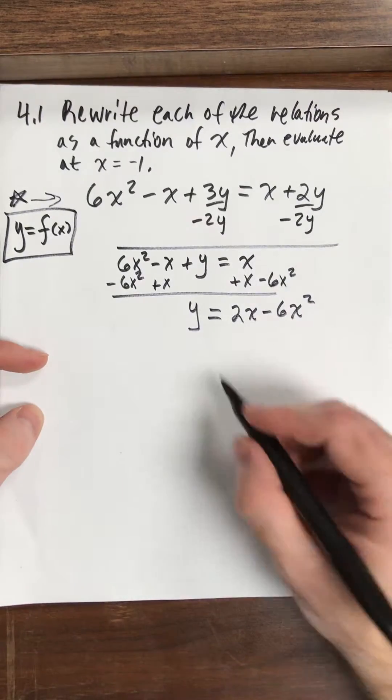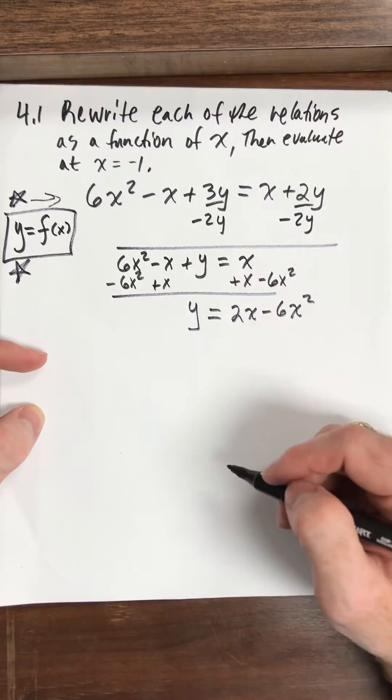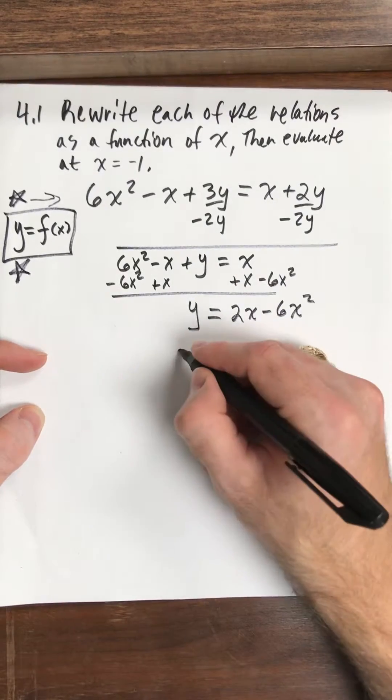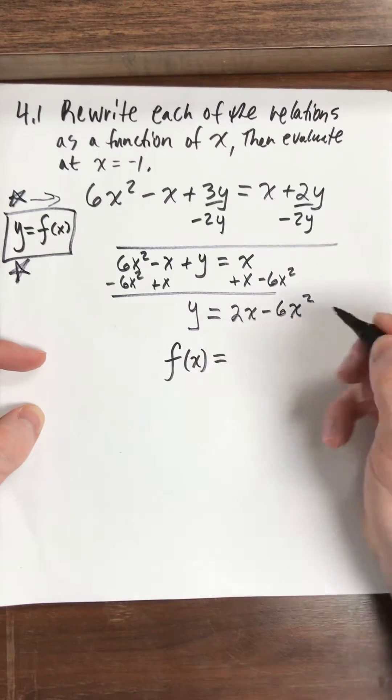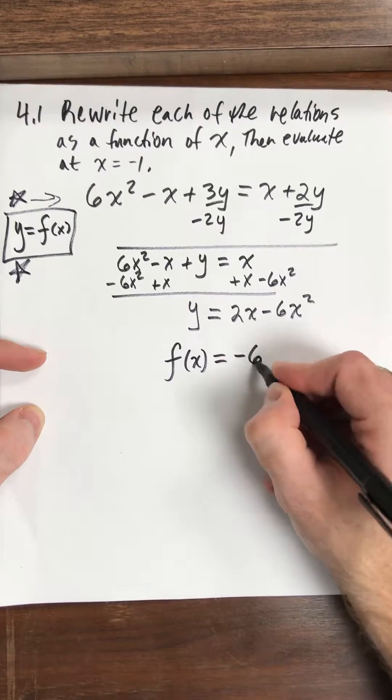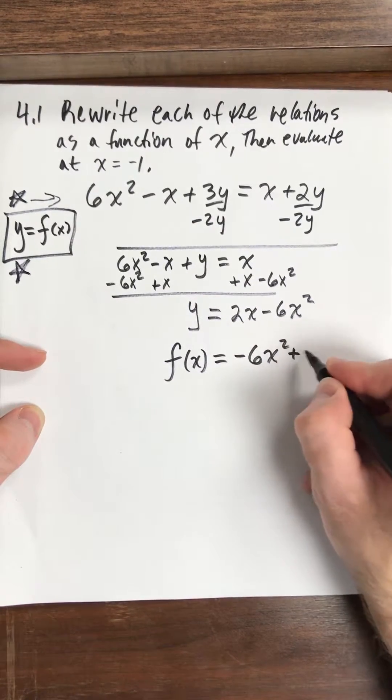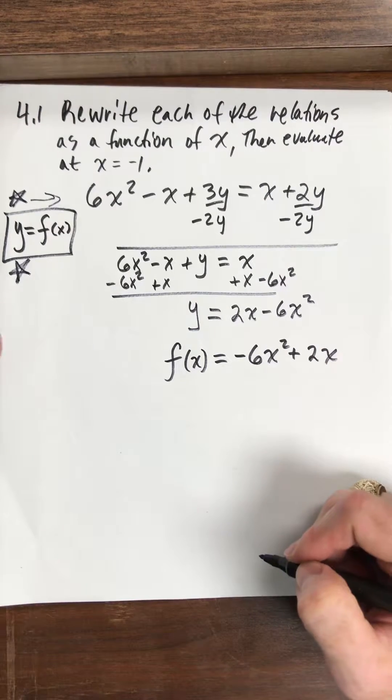And what do I do? I replace y with f of x and I'm going to write my squared term first to be in descending order. So negative 6x squared plus 2x.